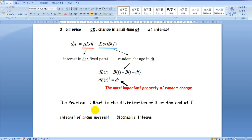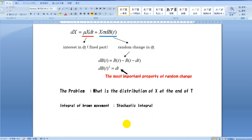The problem is, what is the distribution of X at the end of T? X value at the end of T can be calculated summing up all changes that happen from start till end. Mathematically this operation is the integral. When the change includes a Brownian motion, the integral is called a stochastic integral. Then we explain roughly about the stochastic integral.